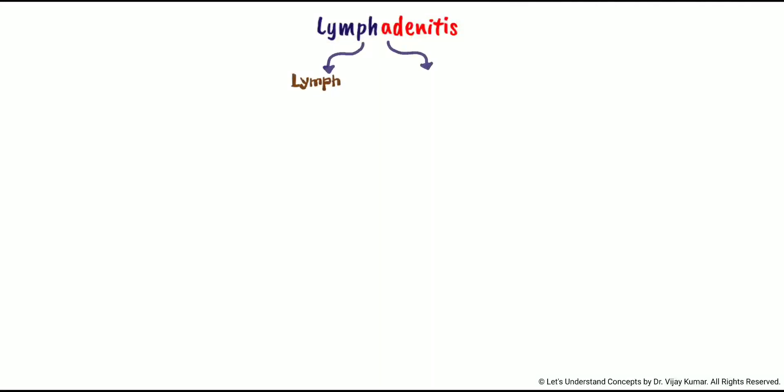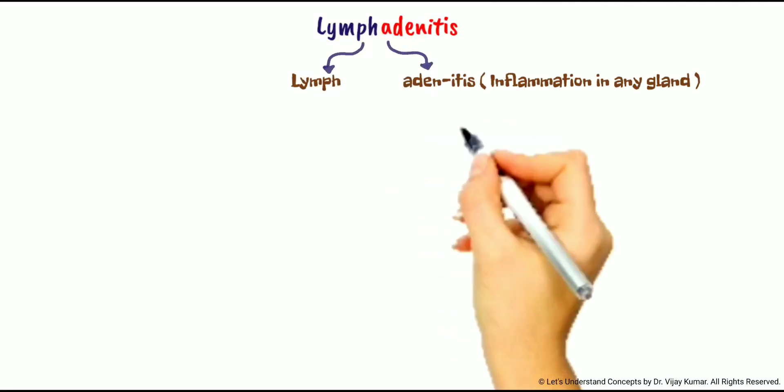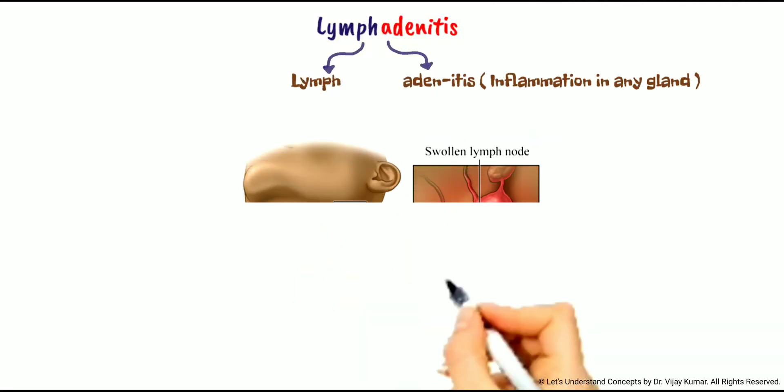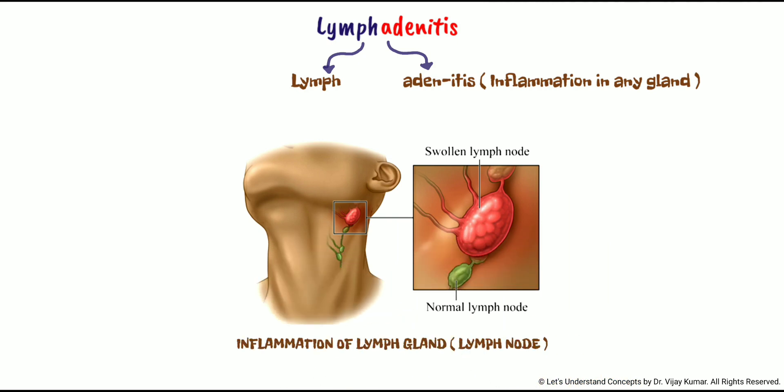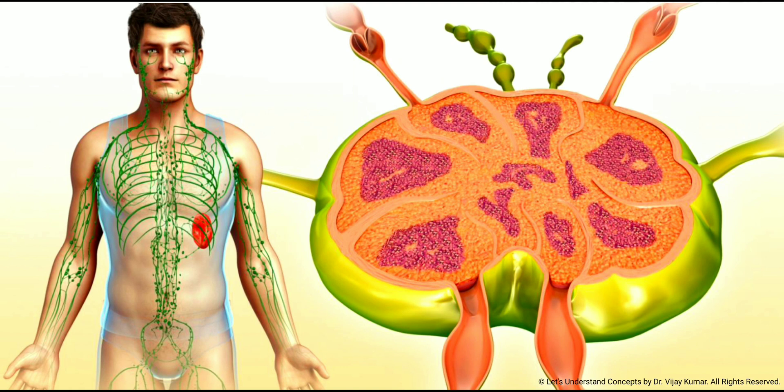Lymphadenitis. Lymph plus adenitis. Adenitis means inflammation in any gland. Lymphadenitis is an inflammation of the lymph gland, also called as lymph node. It is enlargement in one or more lymph nodes, usually due to infection.